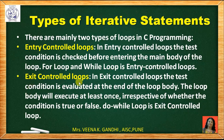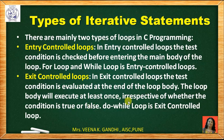Second is exit control loop. In exit control loop, the test condition is evaluated at the end of the body of the loop. This means first the loop statements will be executed and then the condition is checked. The loop body will be executed at least once, irrespective of whether the condition is true or false — even if the condition is false, the body will still be executed.